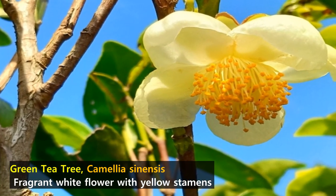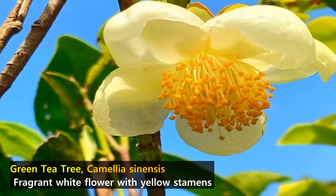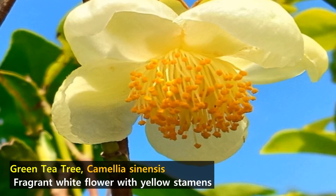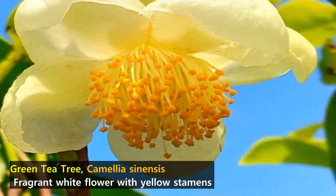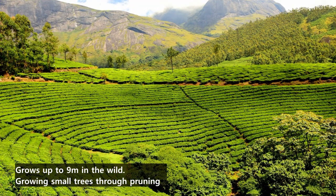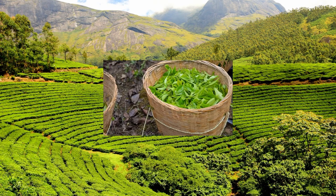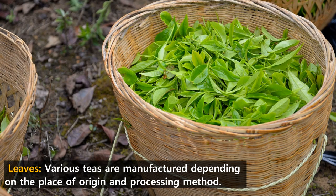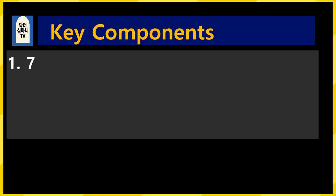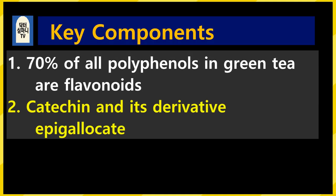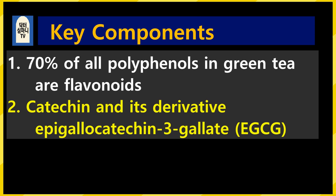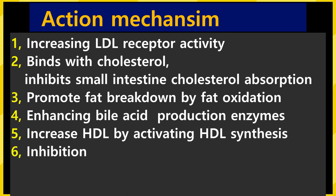This is the green tea tree that you all know well. The photo now shows the green tea tree flower — a very fragrant white flower with abundant yellow stamens. It's widely cultivated around the world. In the wild it grows up to 9m tall, but when cultivated it is continuously pruned into a short tree, and the leaves are picked and processed. A variety of teas are manufactured depending on the country of origin and processing method. The main active component of green tea leaves is flavonoids, which make up 70% of the polyphenols contained in the leaves. Catechin is a well-known component, and epigallocatechin-3-gallate (EGCG), a derivative of catechin, is the main active component.